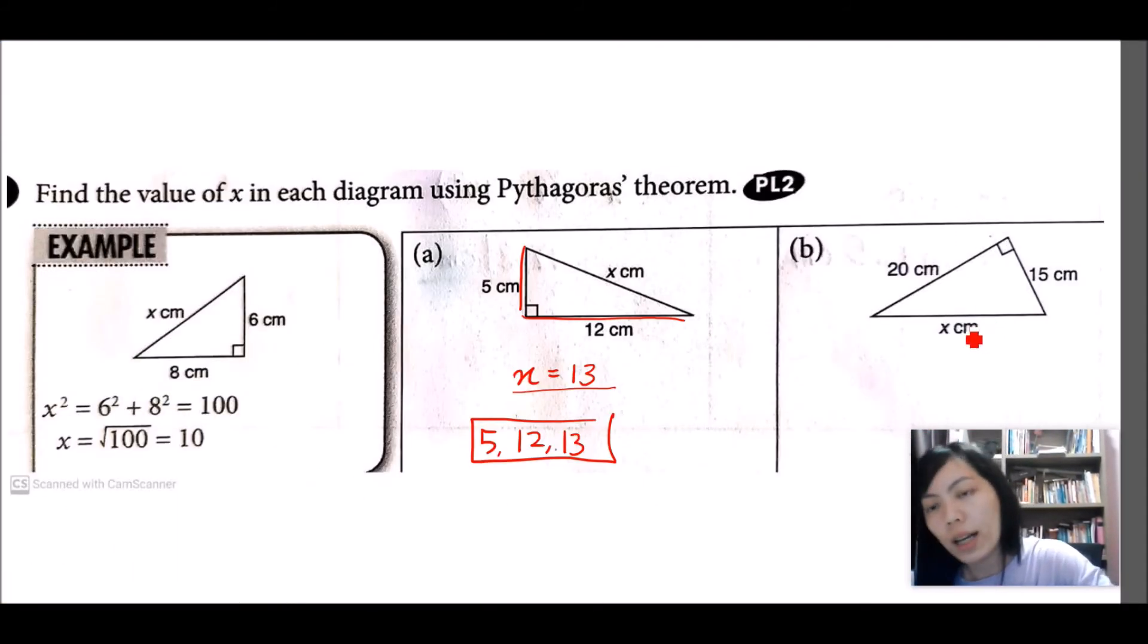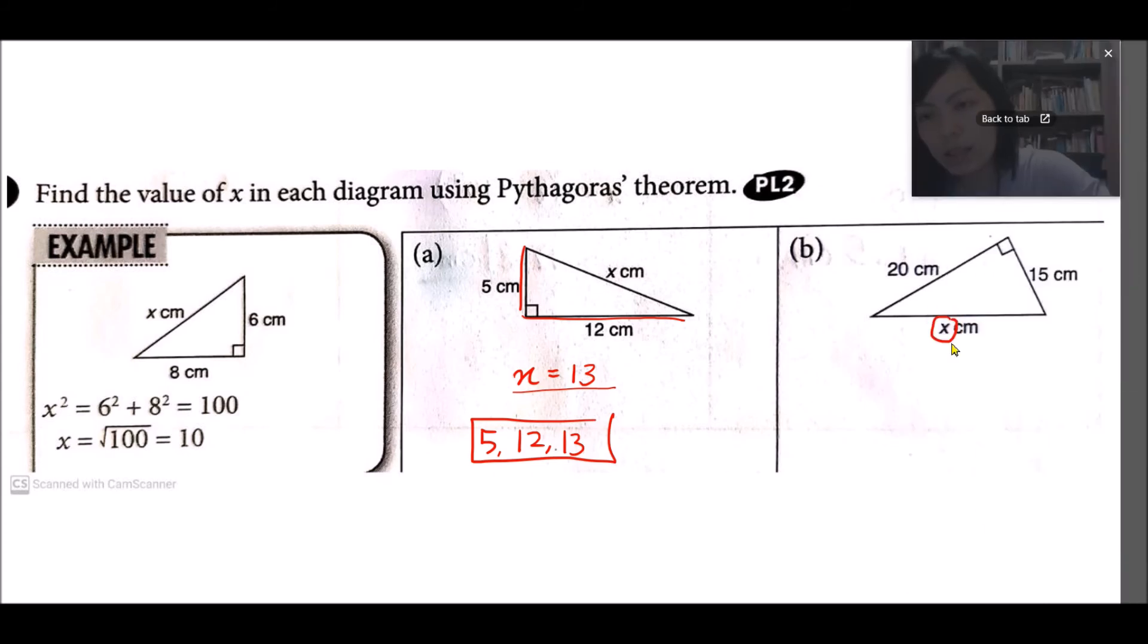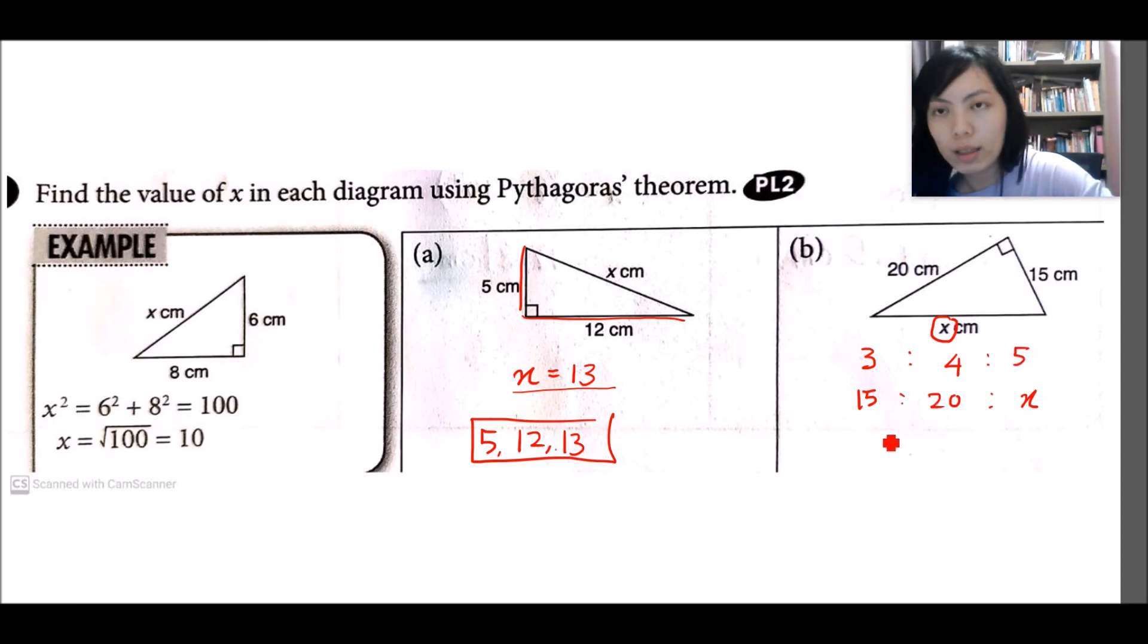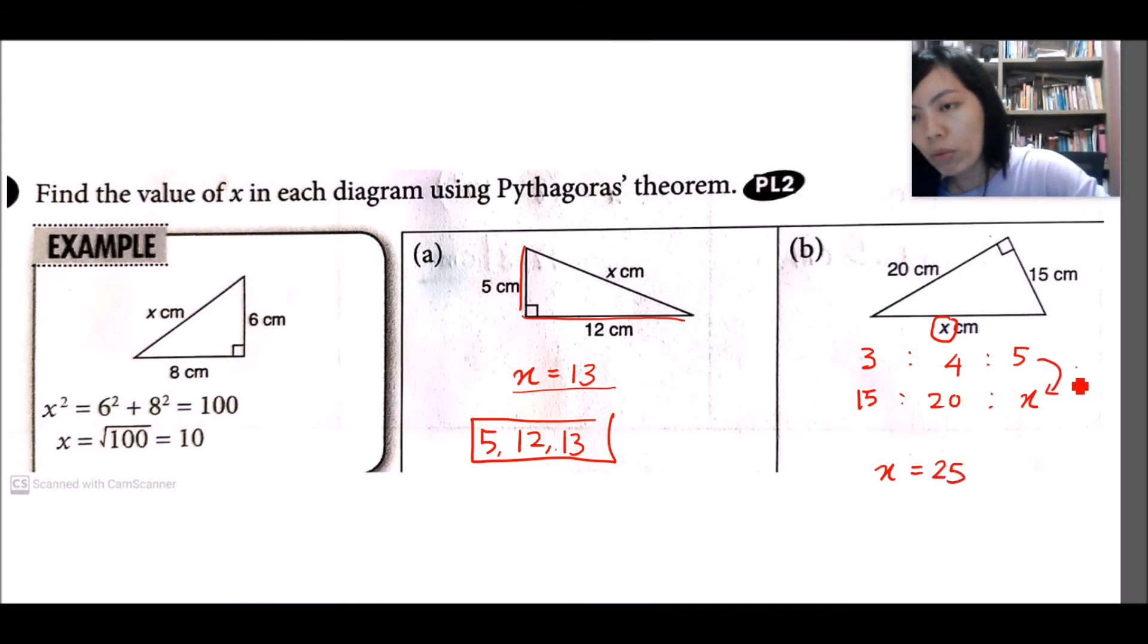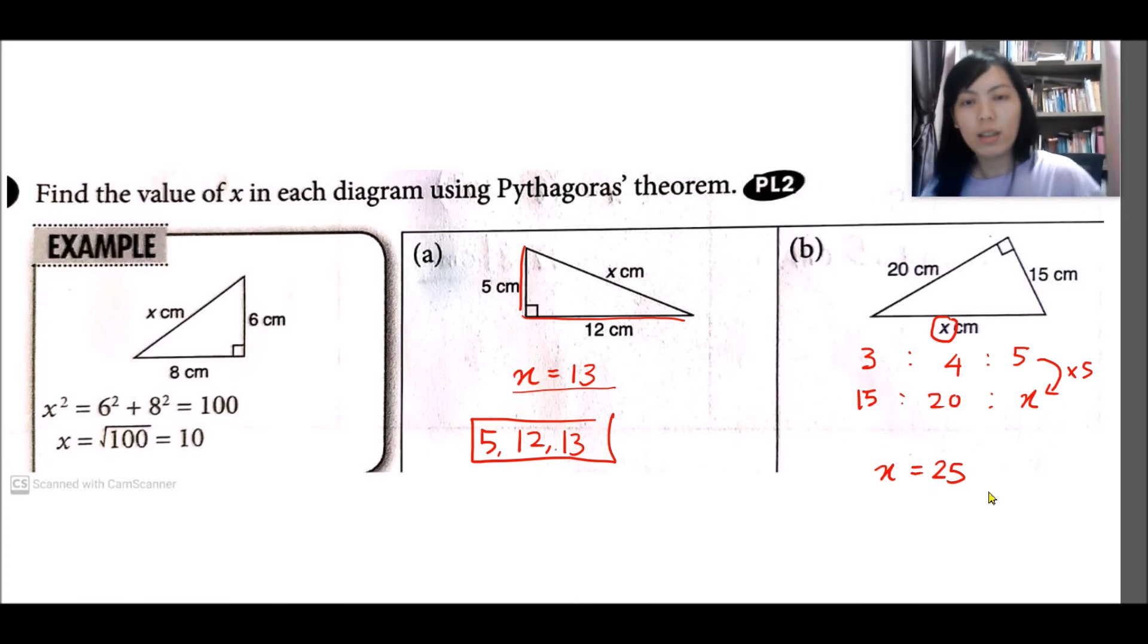Can any of you tell me what is the value of x here? So you see, this is 15, 20, and x being the longest side. Does it fit the ratio of 3, 4, 5? It does. So x is actually 25 because 5 times 5 makes 25. Is it very easy?